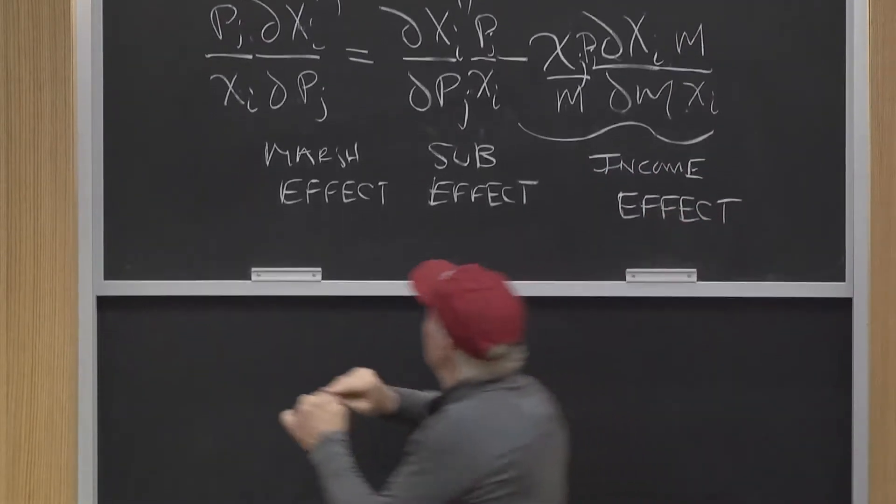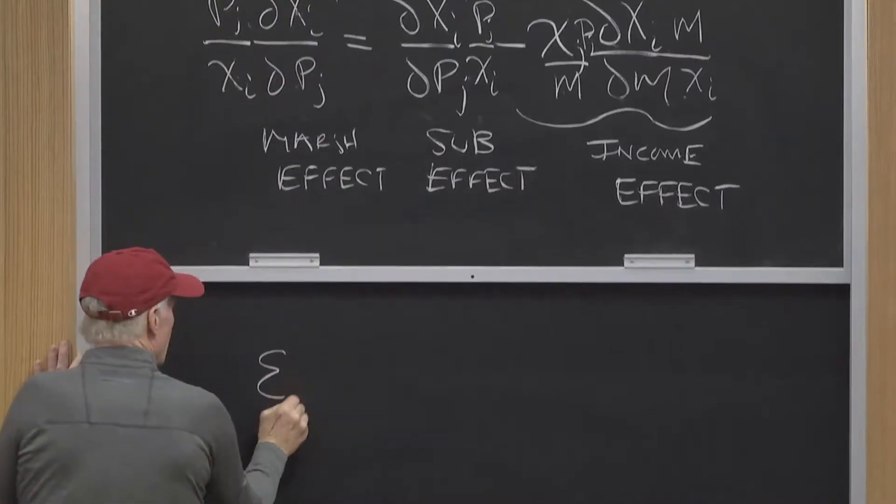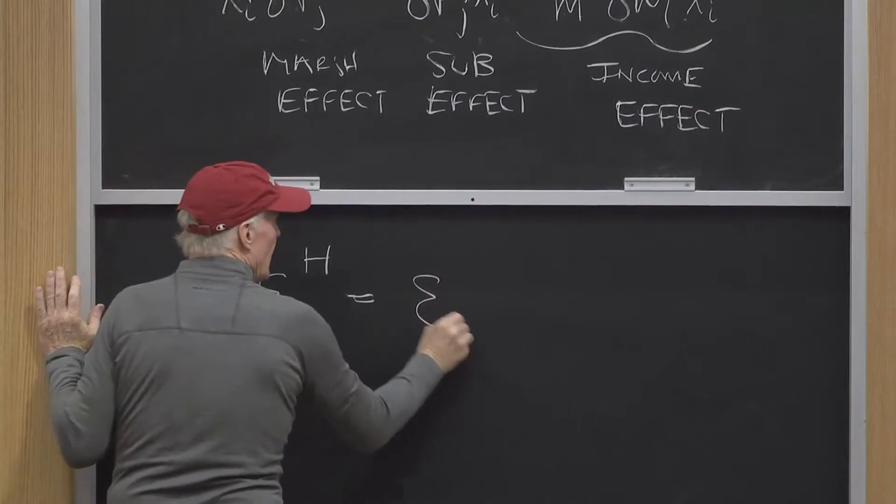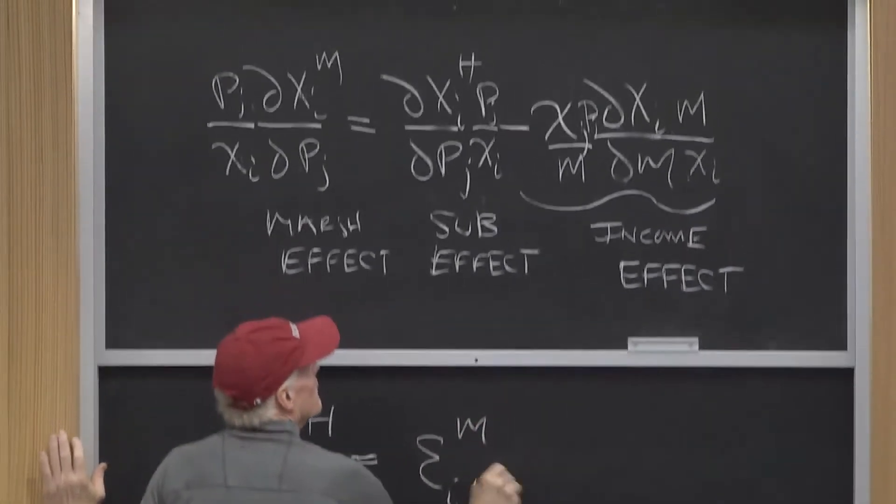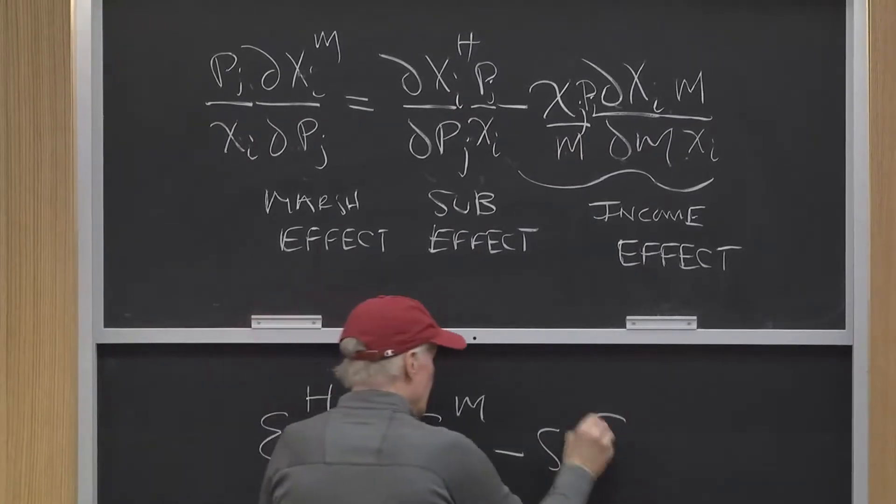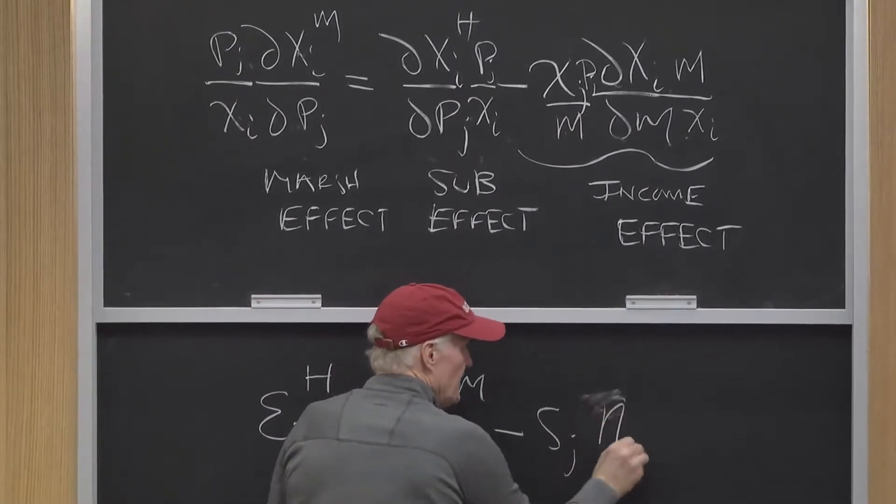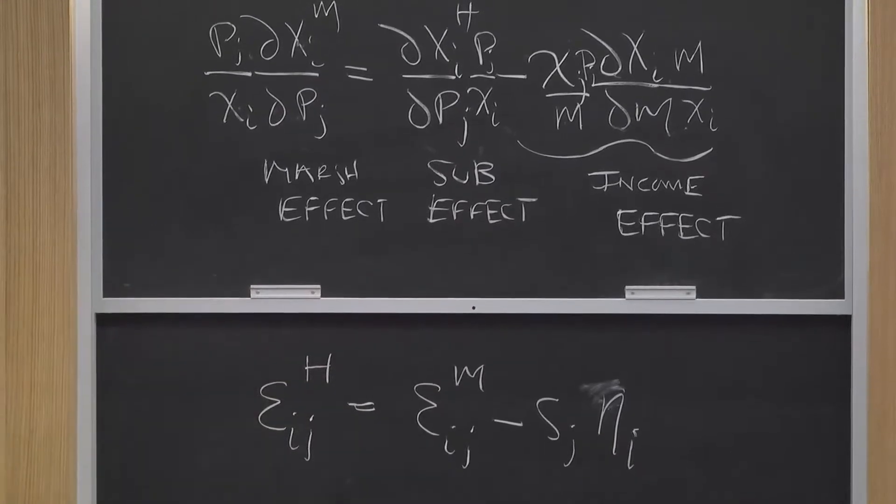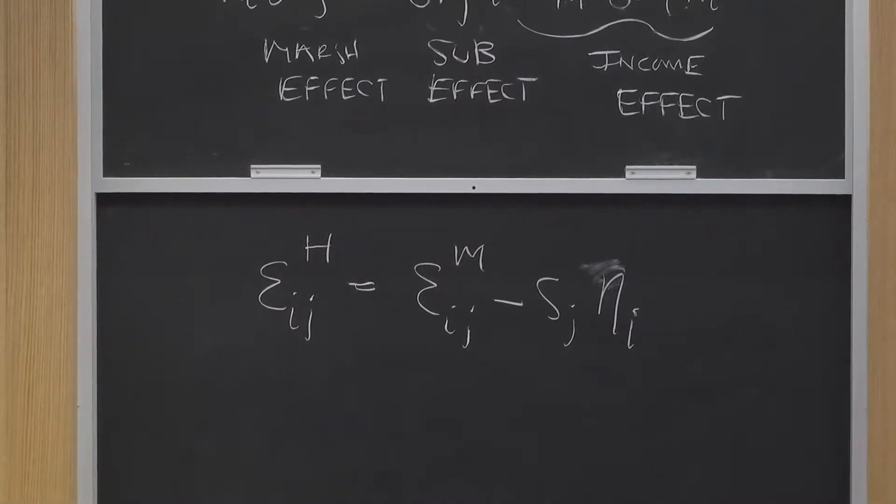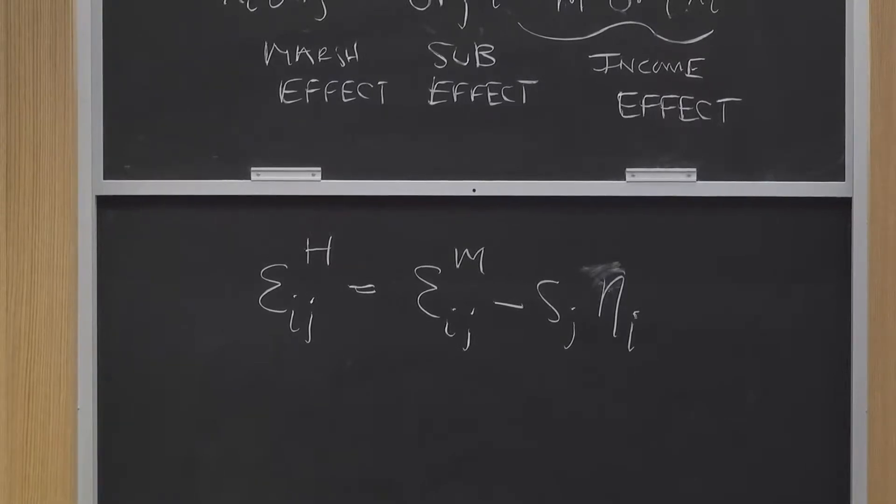And so this is epsilon ij Hicksian equals epsilon ij Marshallian minus the budget share of good j times the income elasticity of demand for good i. That's the elasticity version of the Slutsky equation.